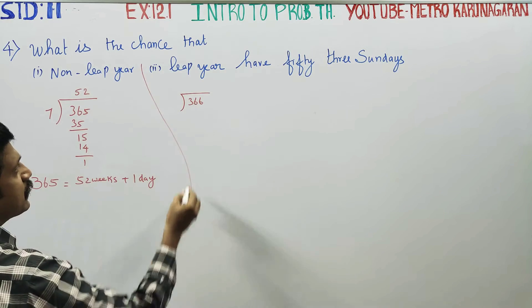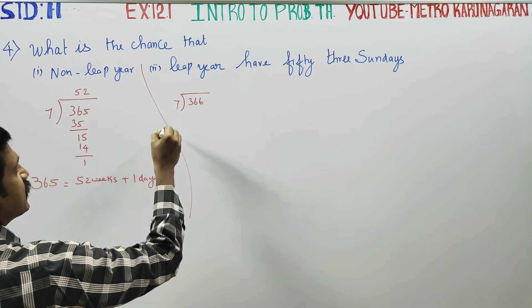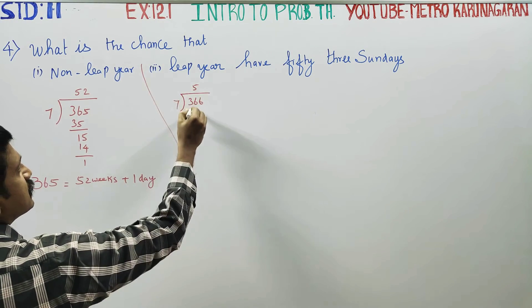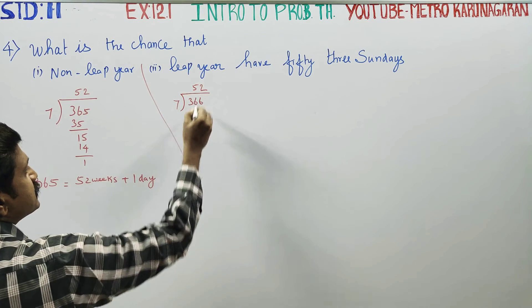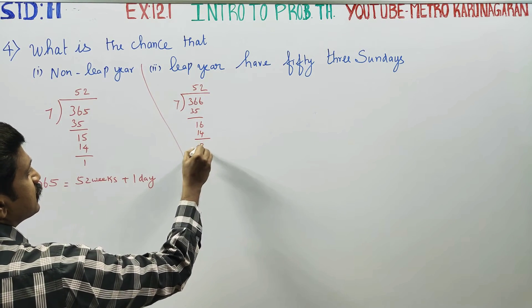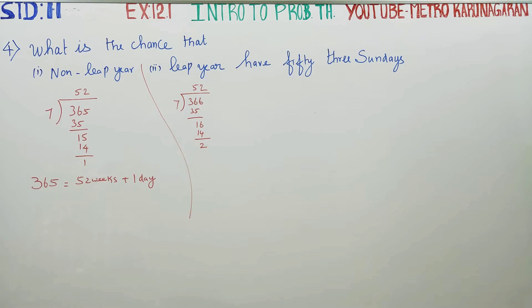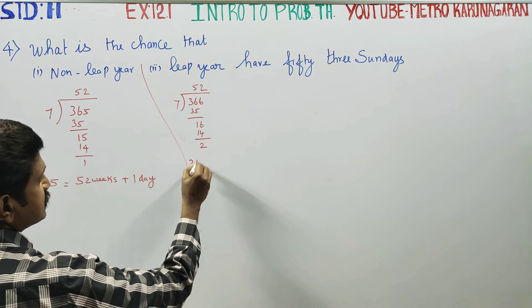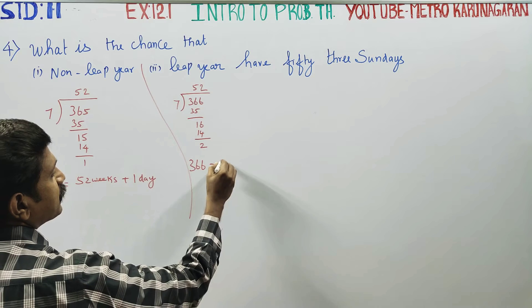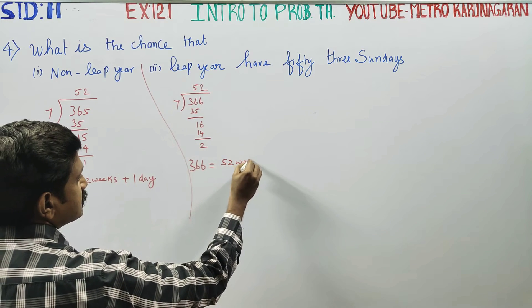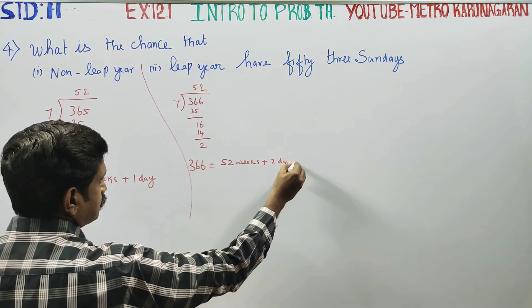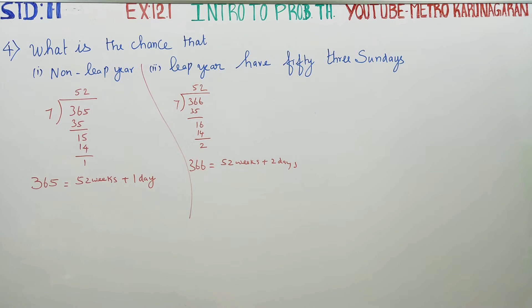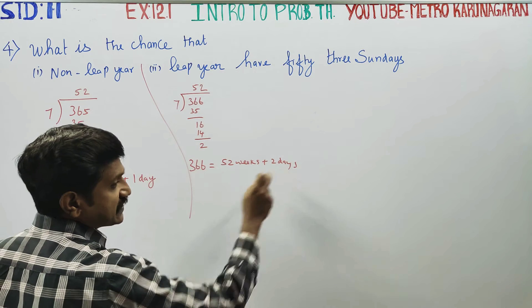For a leap year, 7 times 52 is 364, balance is 2 days. So 366 days can be written as 52 weeks plus 2 days extra.